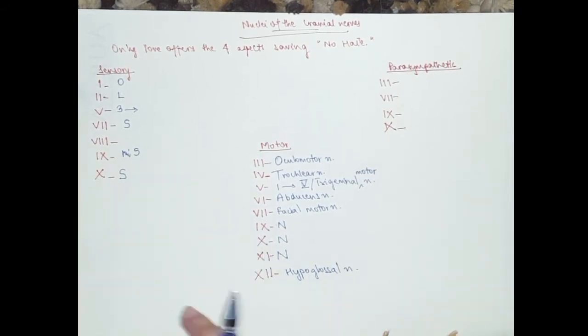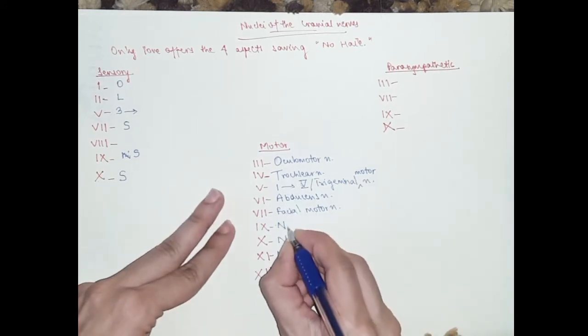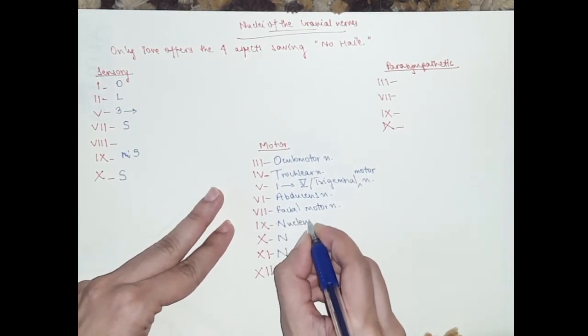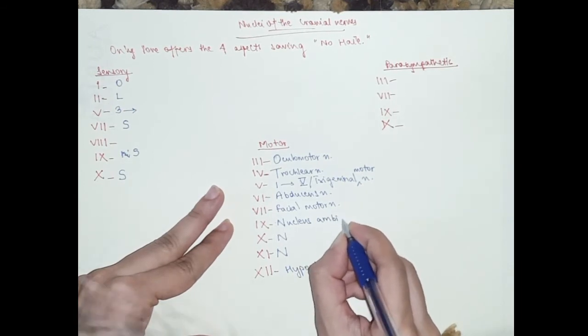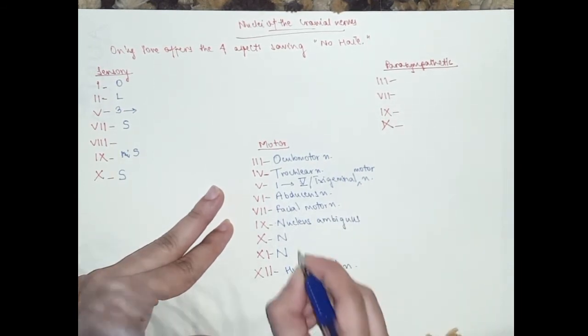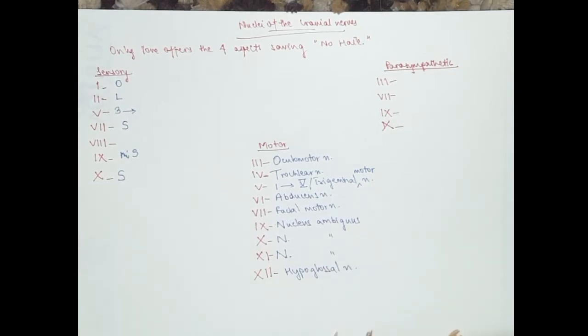Now, if you remember from my previous videos, nine, ten, and eleven share the same nucleus, which is motor, and is called the nucleus ambiguus. That's our motor.